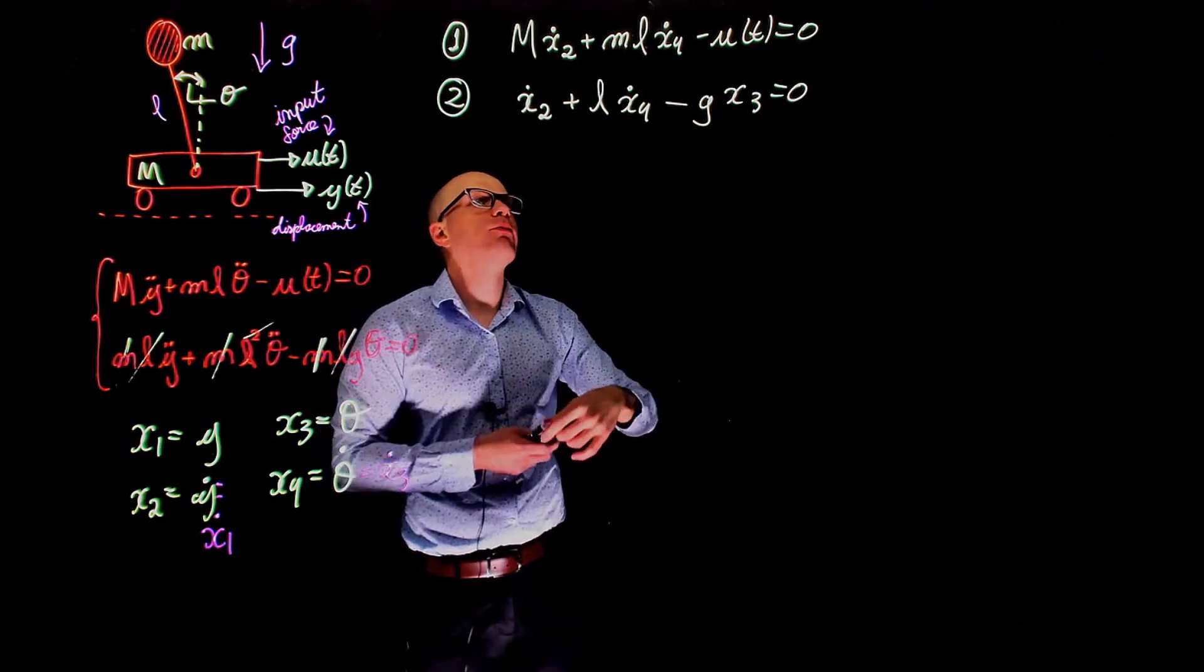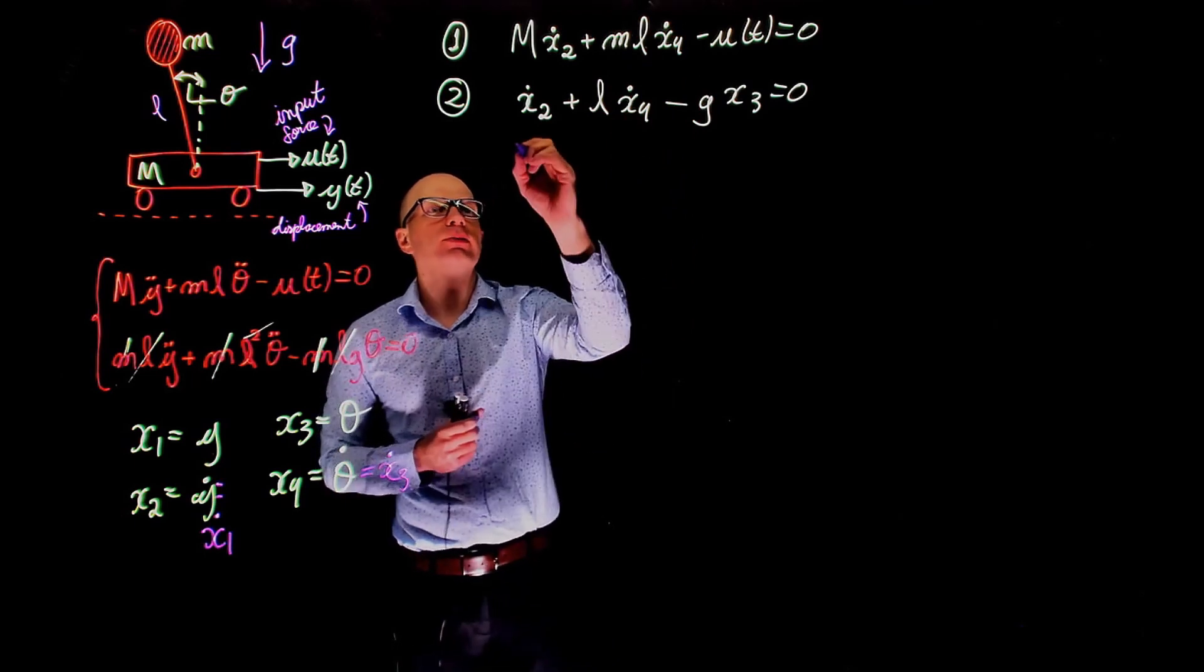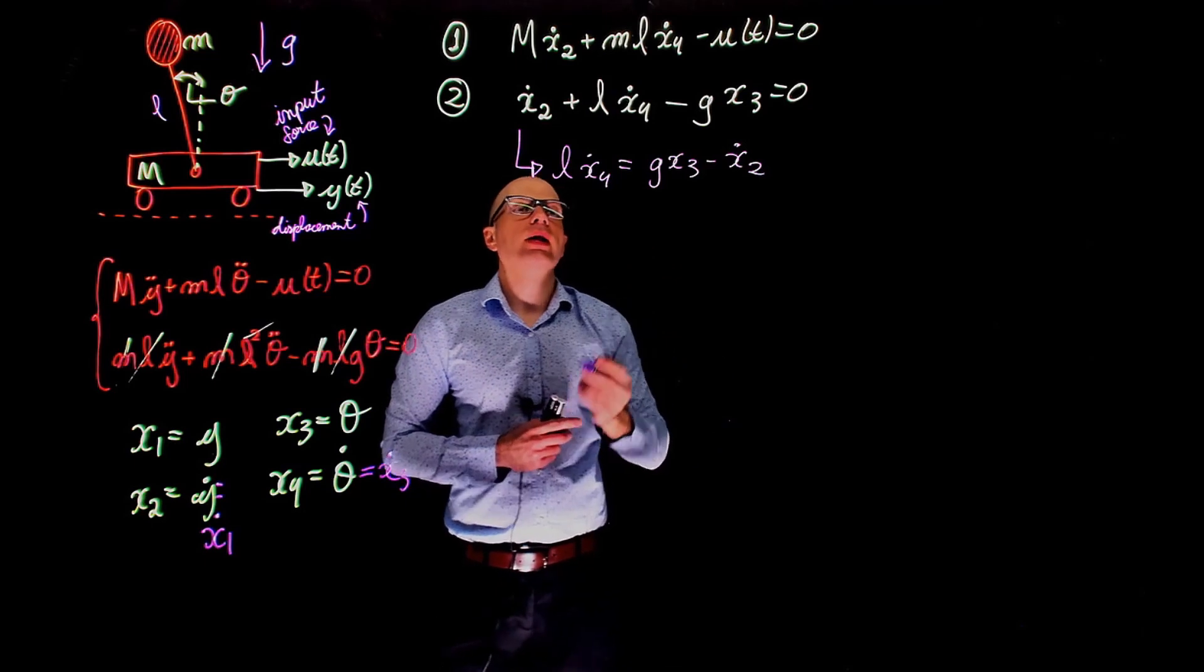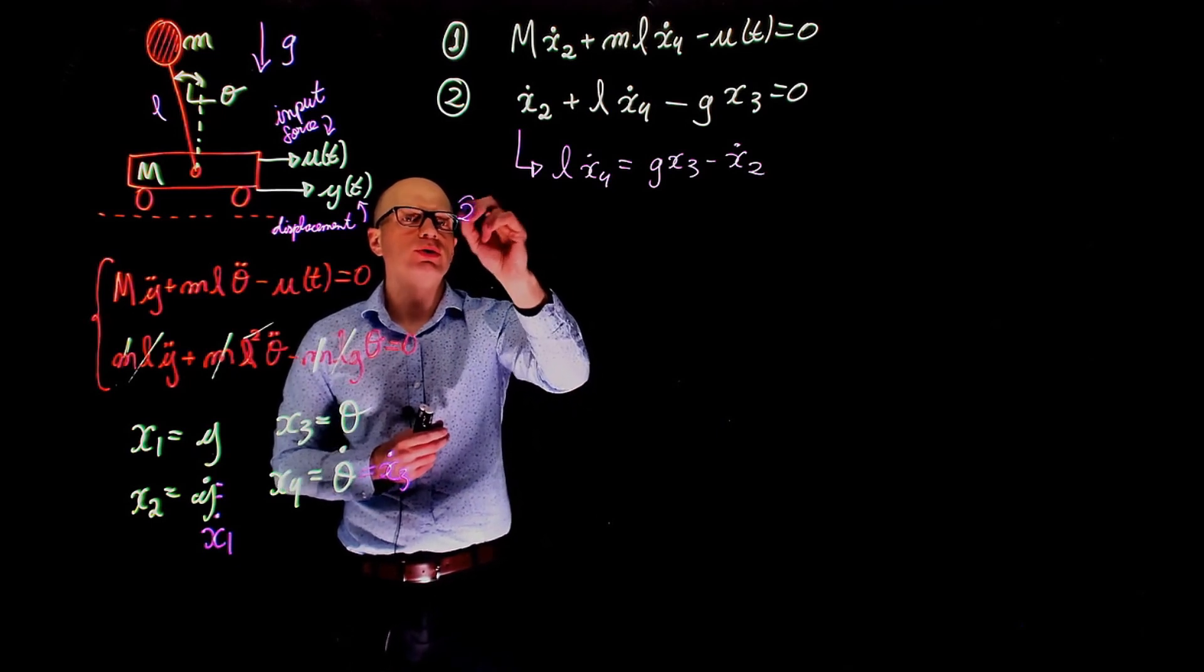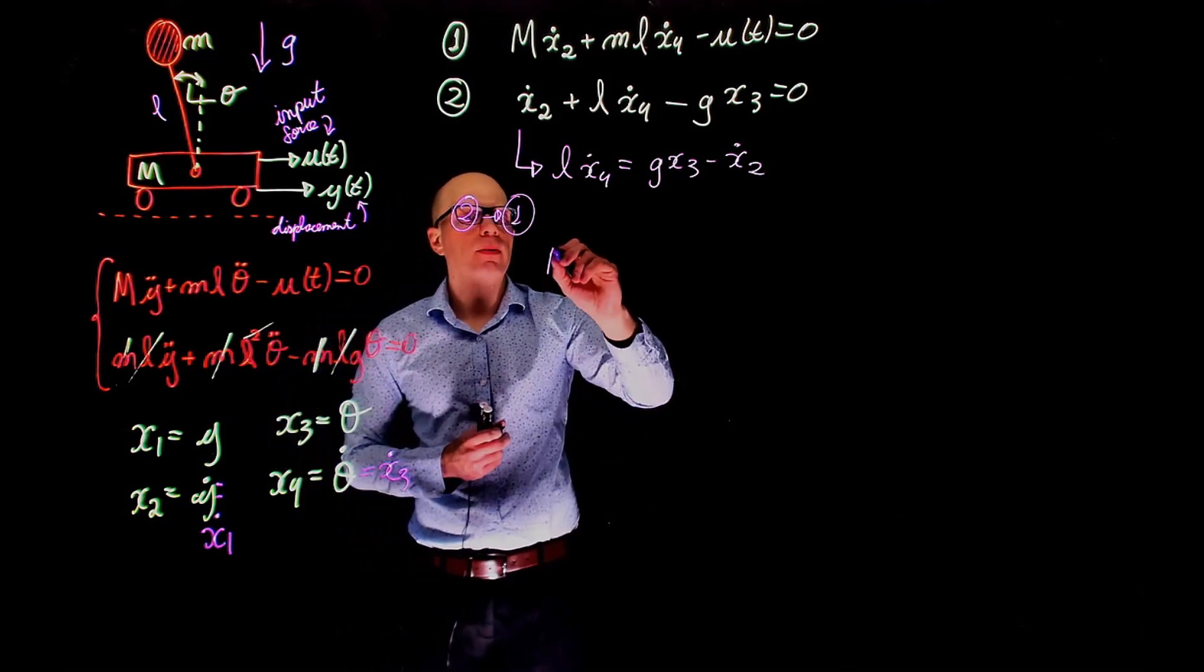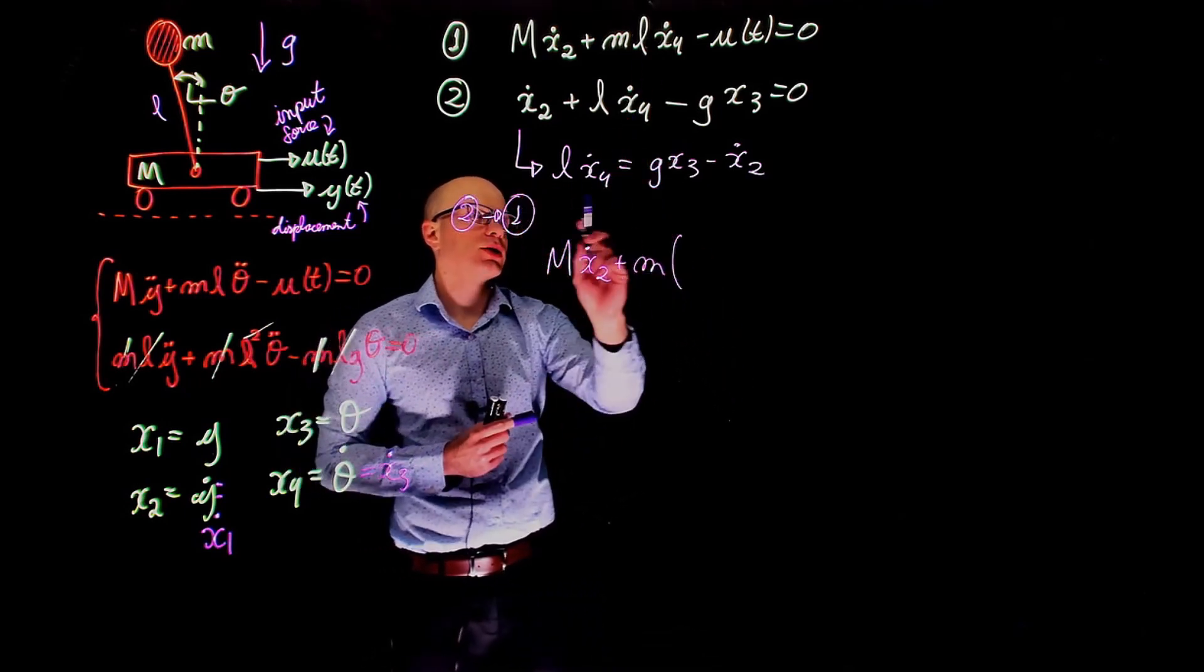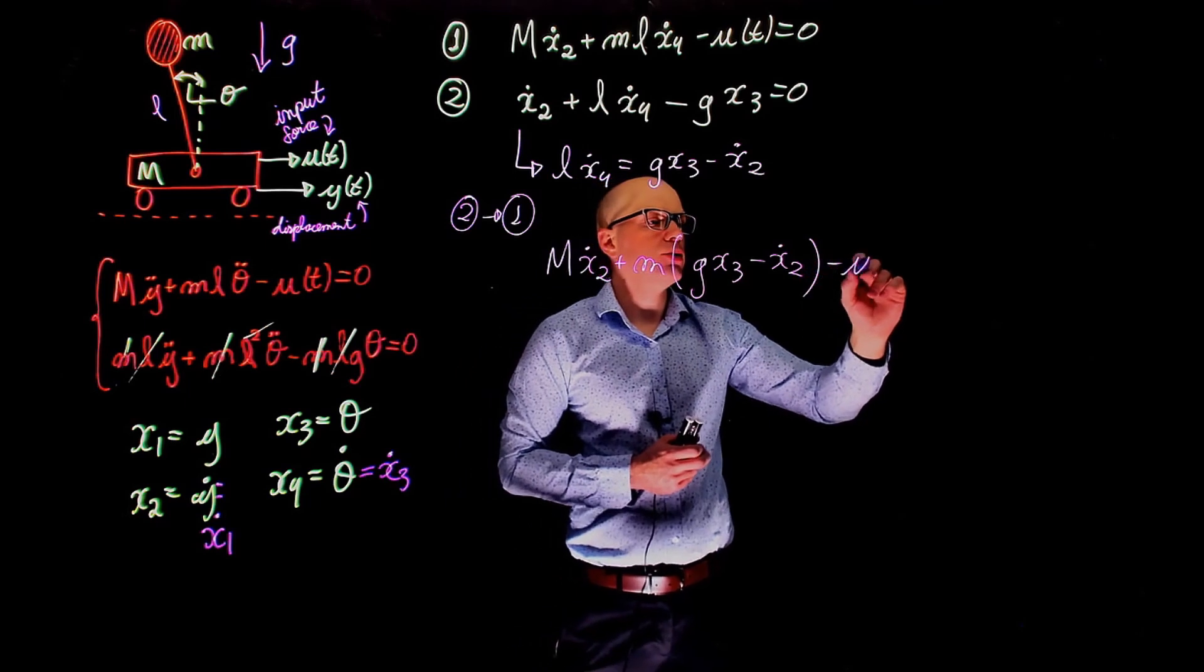If you look at equation two, it would be very convenient to isolate for l times x4, because this is the term that it shows there. So from this equation, we can say that l x4 dot is equal to g times x3 minus x2 dot. And now replace l x4 dot in this equation. So now back to one. So we are actually doing two into one.